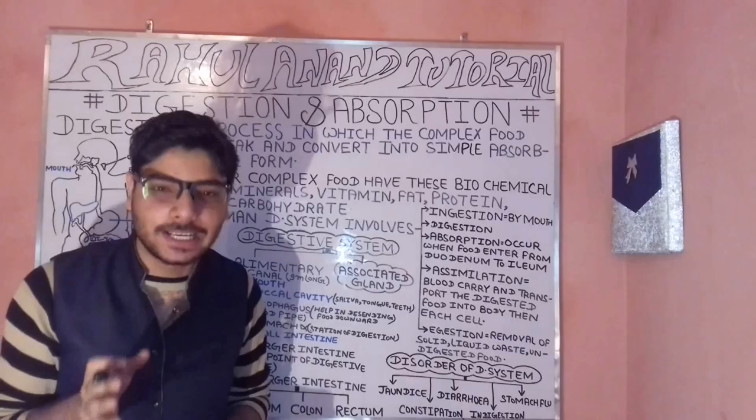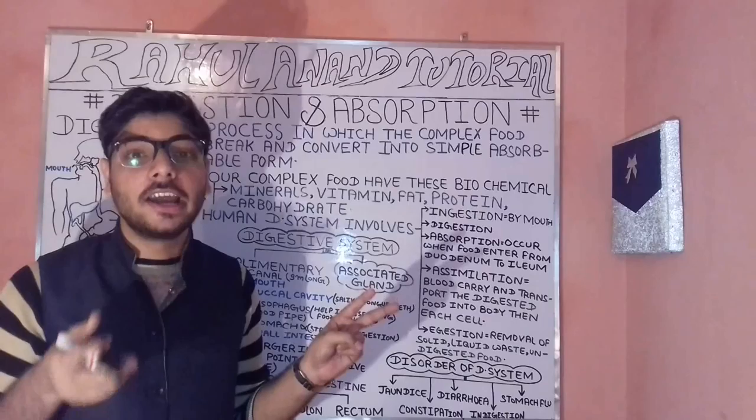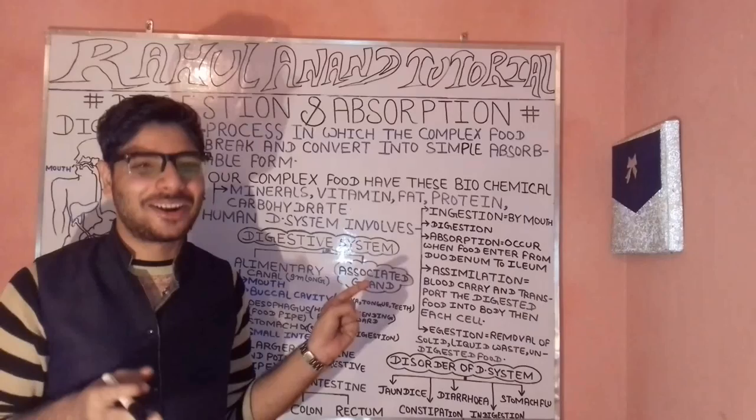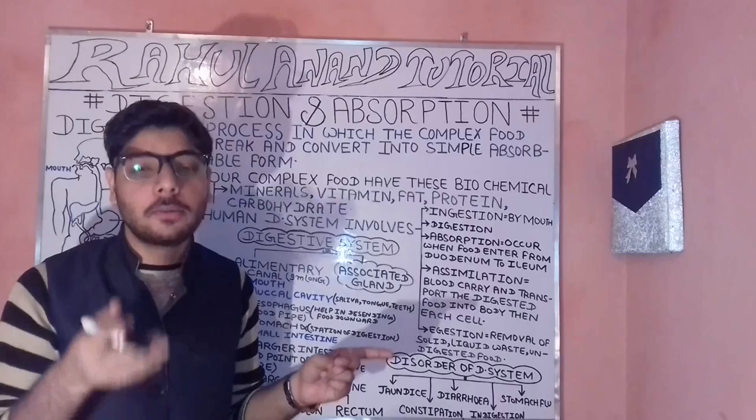Polysaccharides are carbohydrates which can be broken down into 2 to 10 units of monosaccharides or simpler sugars. Oligosaccharides are those which can be broken down into more than 10 units of monosaccharides.